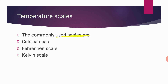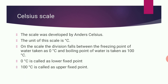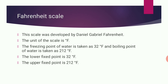Next, temperature scales. There are three different temperature scales: Celsius scale, Fahrenheit scale, and Kelvin scale. The Celsius scale was developed by Anders Celsius. The units are degrees centigrade. On this scale, the freezing point of water is taken as 0 degrees — called the lower fixed point — and the boiling point of water is taken as 100 degrees centigrade, called the upper fixed point.